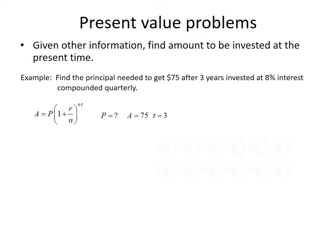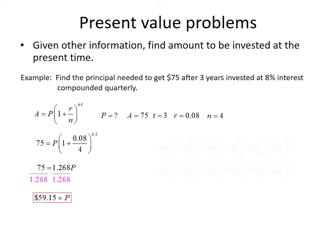After three years so T equals 3, invested at 8% interest so R equals 0.08, compounded quarterly so N equals 4. We plug that into the formula and get 75 equals P times 1 plus 0.08 divided by 4, all raised to the 4 times 3 power. Evaluating with a calculator gives us 75 equals 1.268 P. Dividing both sides by 1.268, we get P is approximately $59.15.